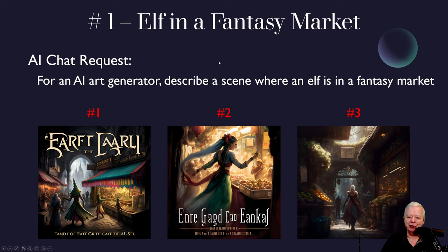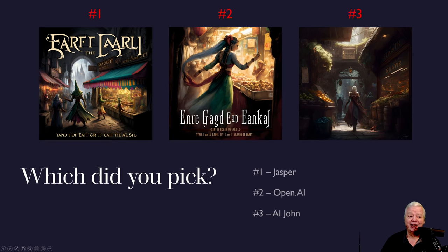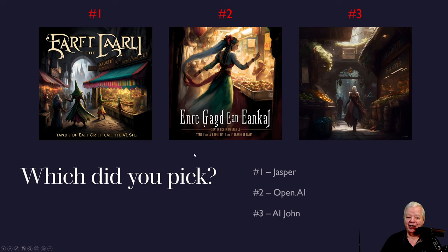Which one do you think was created by who? Got your answers? All right, let's go on to the next one. As you can see, number one was made by Jasper, number two was made by OpenAI, and number three was made by me. I followed the same rules for all three — put in the prompts one time, added photography and no blemishes at the end just to keep it fair across the mediums, and picked image number three for upscaling. Pretty cool, huh? That one was fairly easy — at least I think it was.